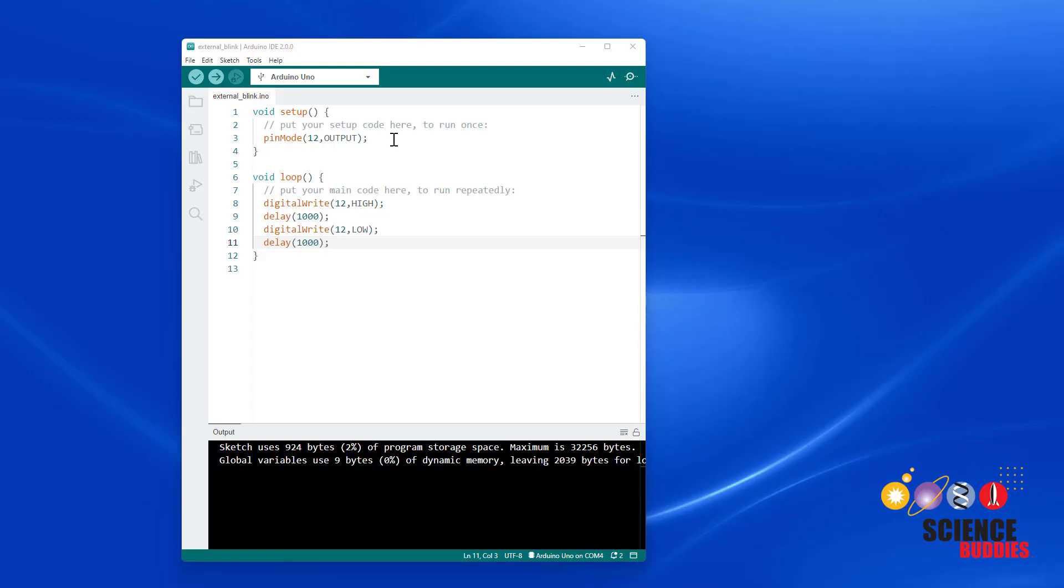If you want to modify the program to also blink an LED connected to pin 8, you can do that mostly by copying and pasting existing lines of code. For example, I can copy and paste my pinMode command in the setup function, but I'm going to change the 12 to an 8 to tell the Arduino to use pin 8 as an output.